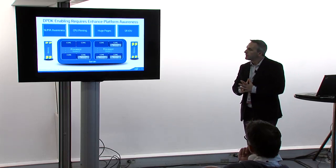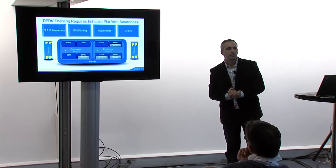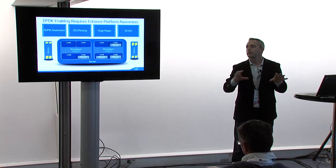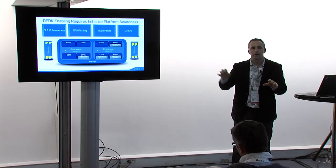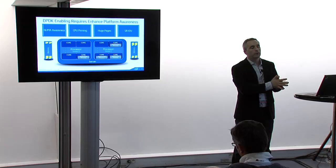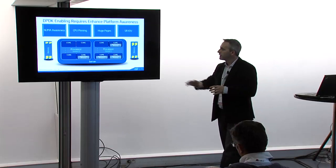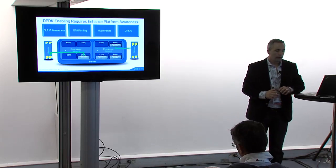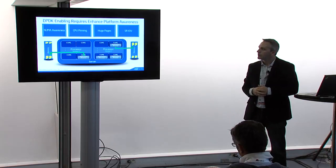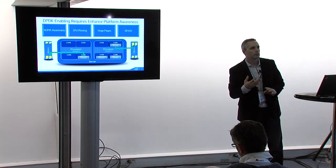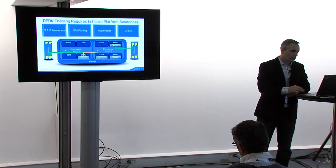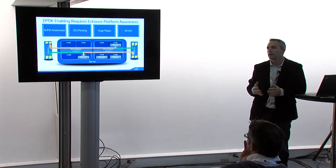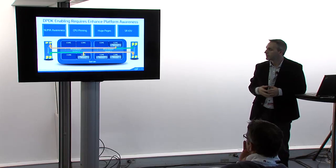NUMA — non-uniform memory architecture — is all about being aware that in a multi-socket system, the memory you have can be more closely associated with one socket than another. Socket one has local memory, and other memory is remote memory. An application set up to access local memory has a much faster, lower-latency memory access. The same application could be accessing memory on the remote socket, which is still fast but not as low-latency as when you do this configuration properly.